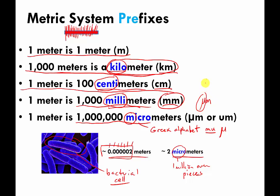The correct abbreviation for micrometer is the Greek letter mu followed by m. However, mu is very hard to find on a keyboard, so scientists often get lazy and use the letter 'u' as a quick substitute for the Greek letter mu. You'll sometimes see micrometer written with the Greek letter, and sometimes just with a 'u' because people don't want to hunt down Greek letters.